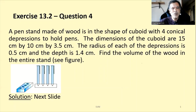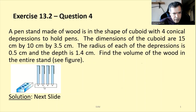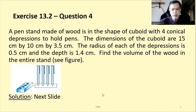Exercise 13.2, Question 4. A pen stand made of wood is in the shape of a cuboid with four conical depressions to hold the pens. The dimensions of the cuboid are 15 cm by 10 cm by 3.5 cm. The radius of each depression is 0.5 cm and depth is 1.4 cm. Find the volume of wood in the entire stand.